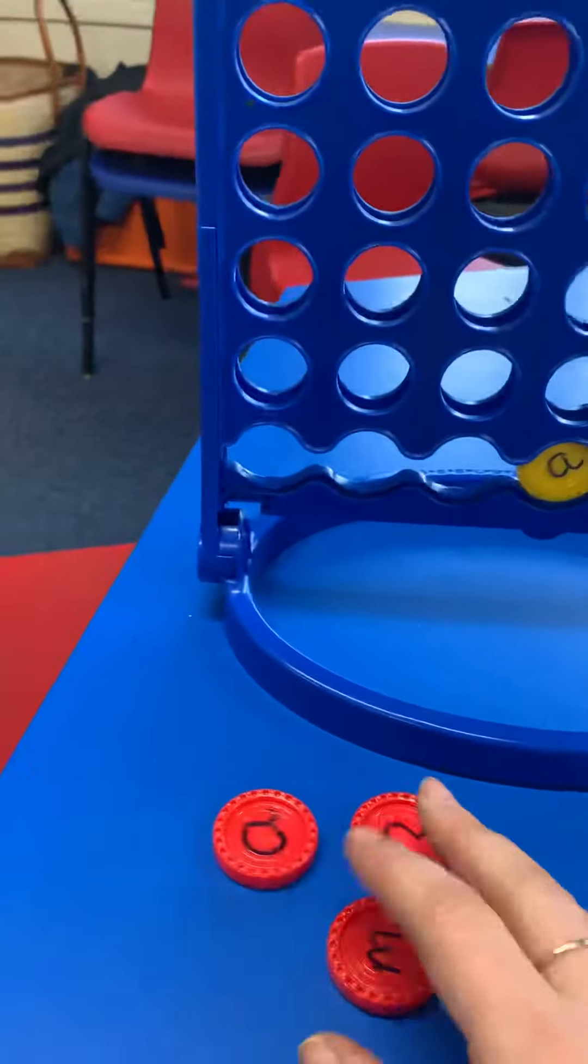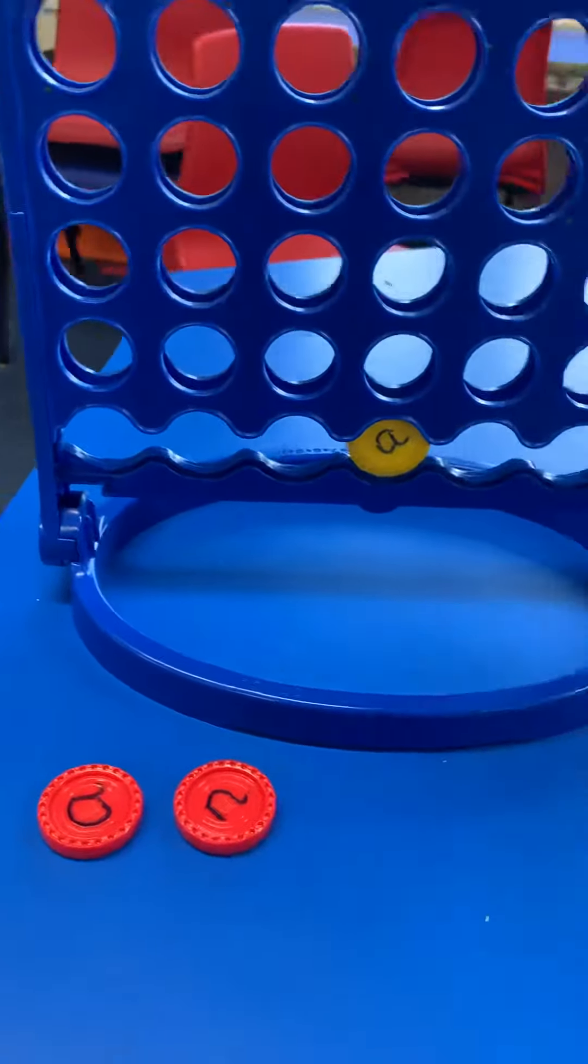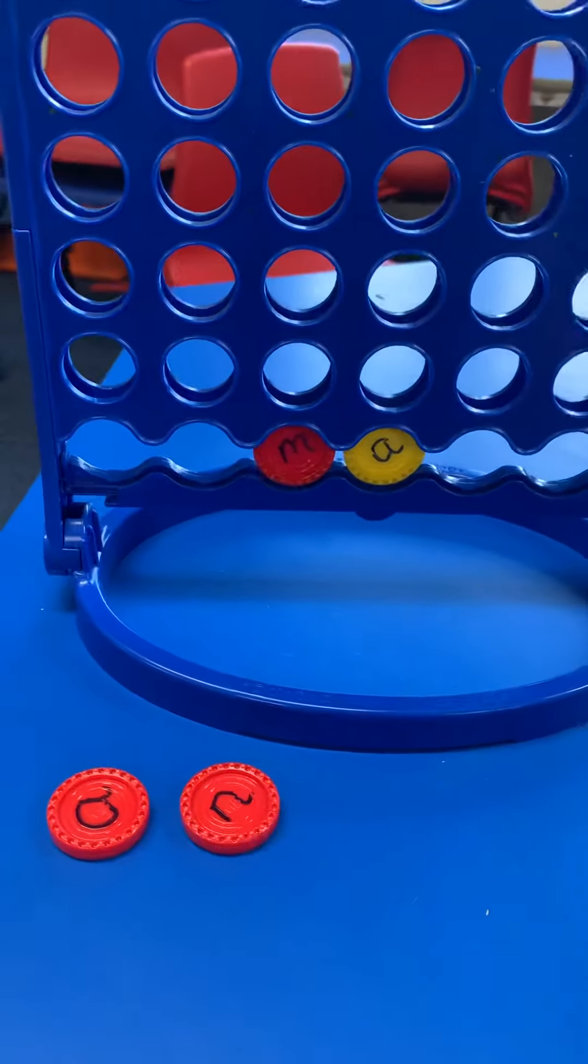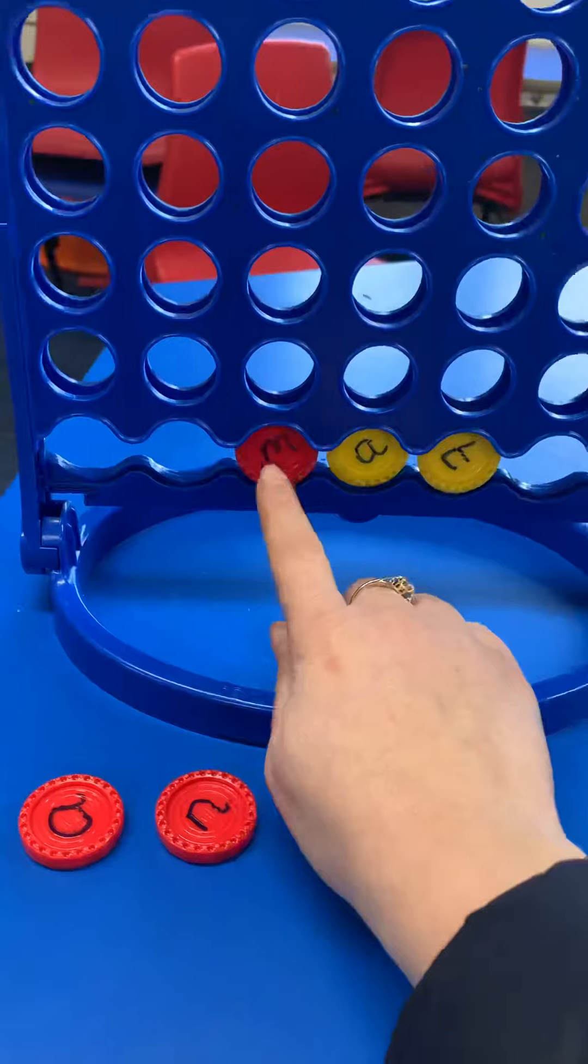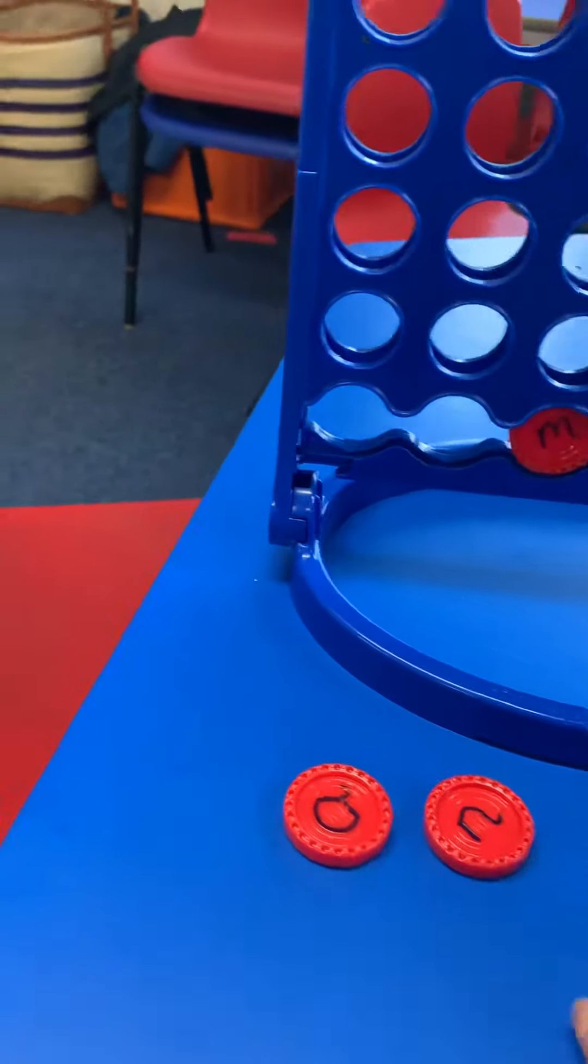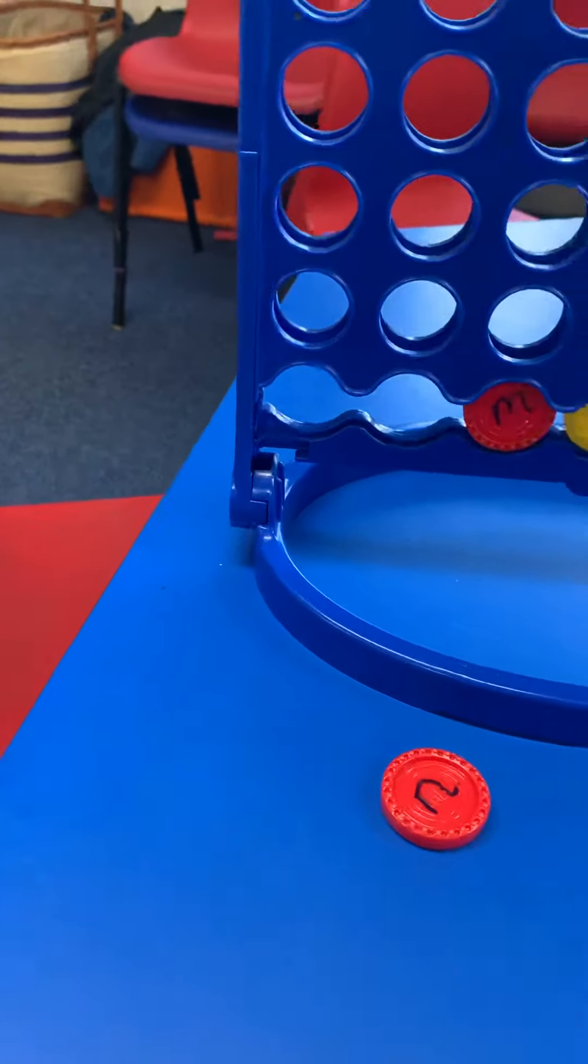I'm gonna go for a sound and then they've got to try and make a word. So CVC word, consonant vowel consonant, and I'm gonna go for mat. So M-A-T, mat.